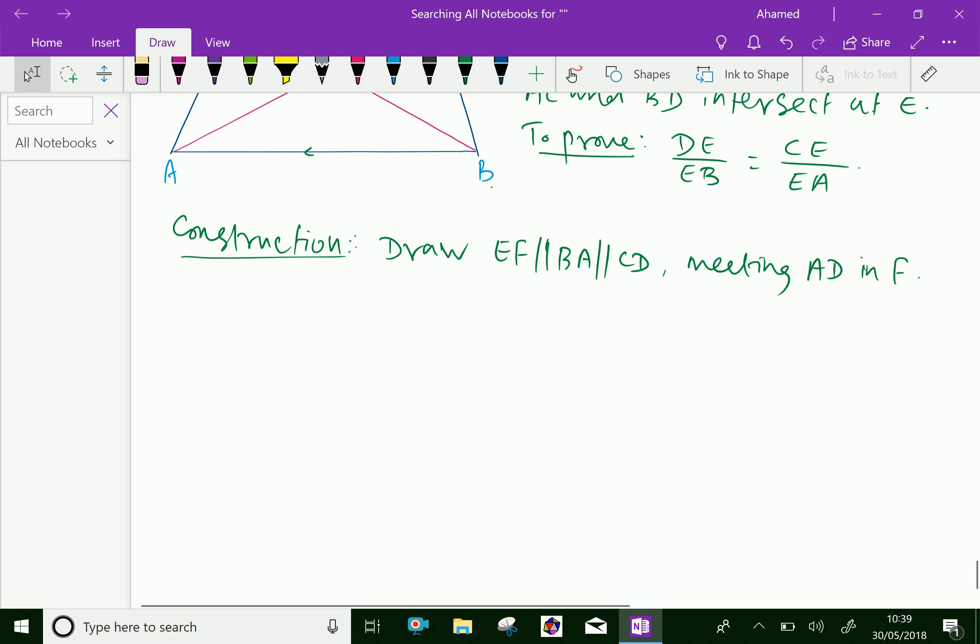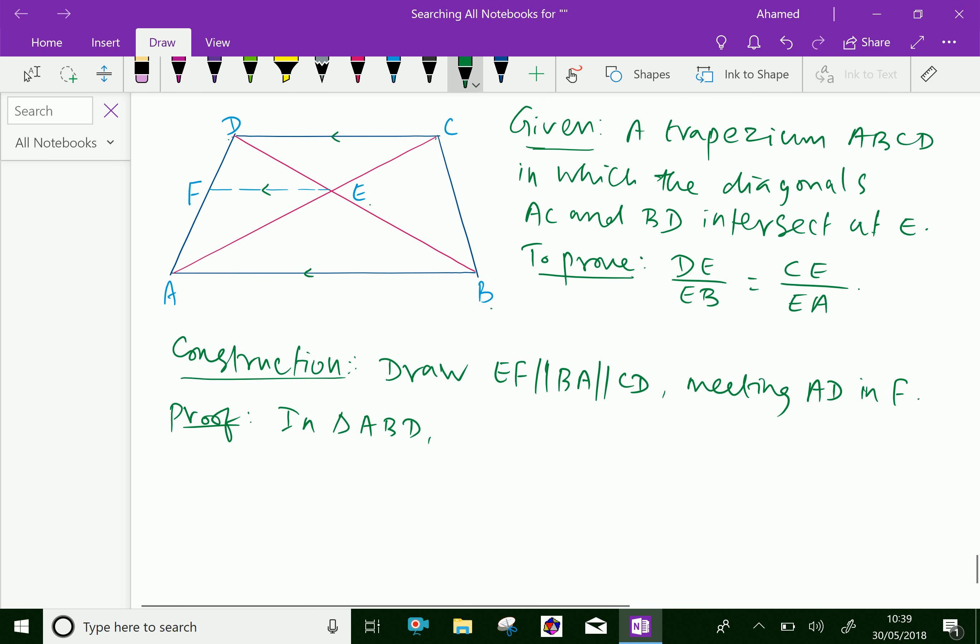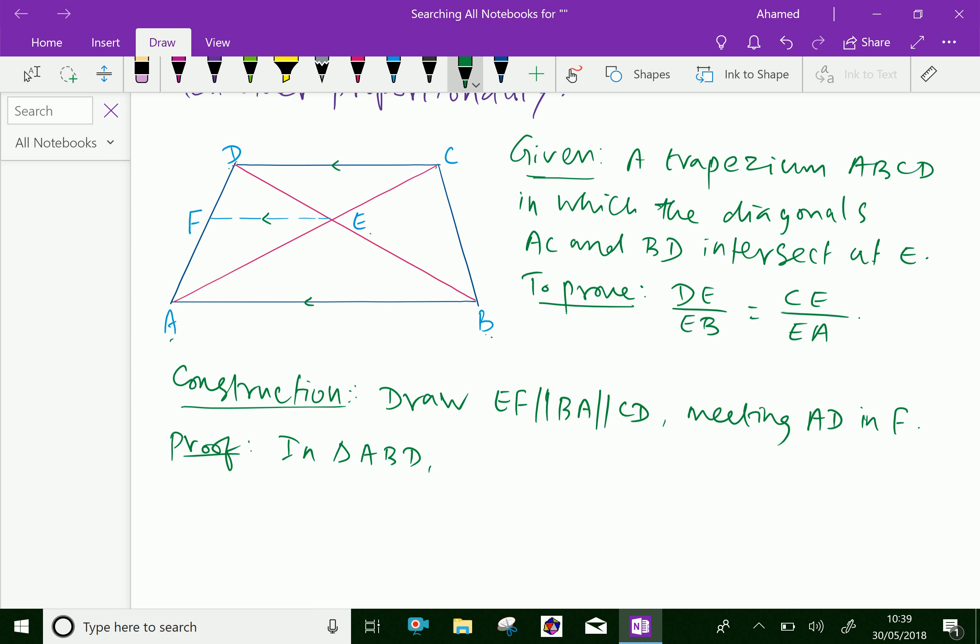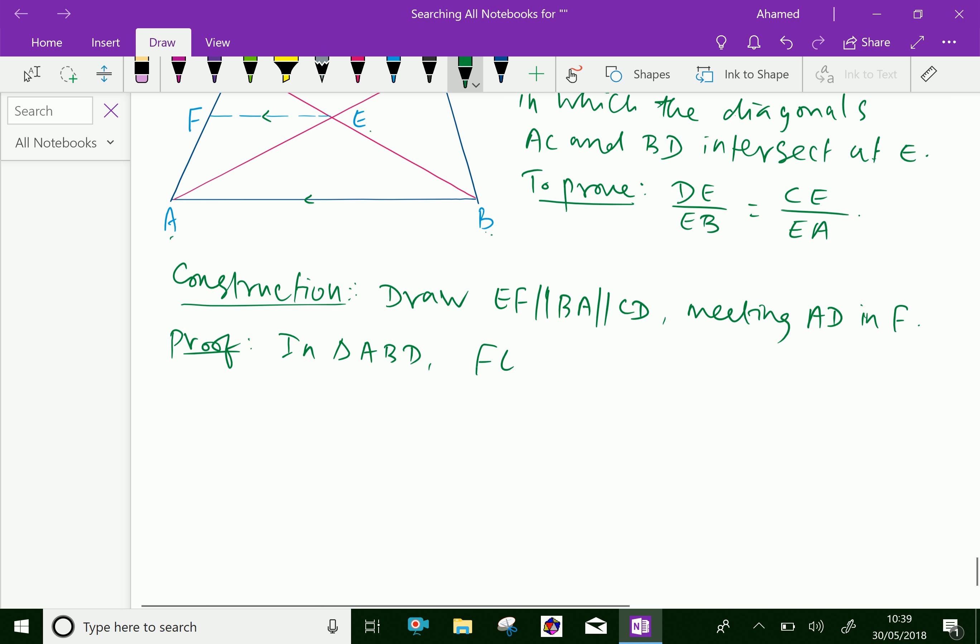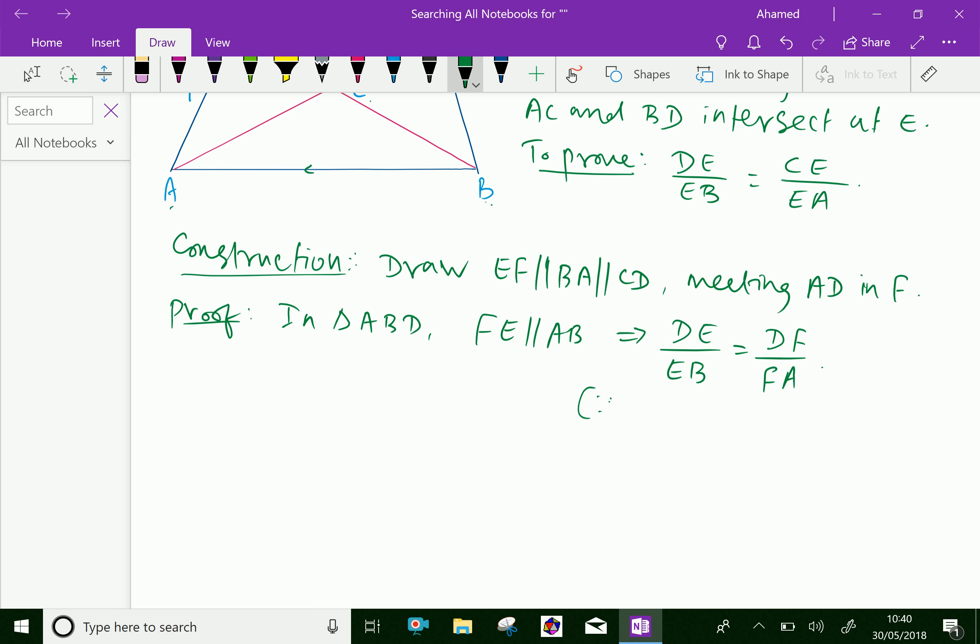Now let us do the proof. In triangle ABD, FE is parallel to AB, which gives the result DE over EB equals DF over FA by Thales theorem. Let this be equation 1.